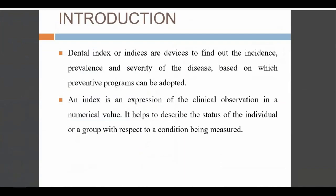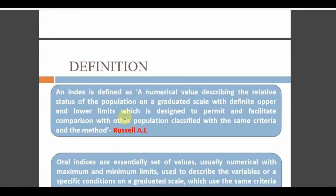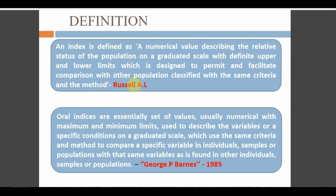An index is nothing but numbers used to find out the incidence, prevalence, and severity of disease, based on which preventive programs can be adopted. We can say that it expresses clinical observations in numerical values. The most common definition is given by Russell: it is a numerical value describing the relative status of a population on a graduated scale with definite upper and lower limits, designed to permit and facilitate comparison with other populations classified by the same criterion and methods.